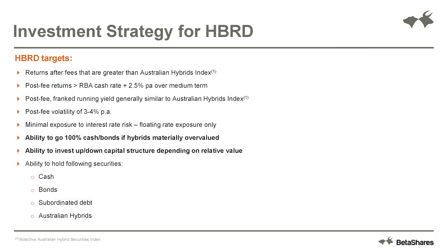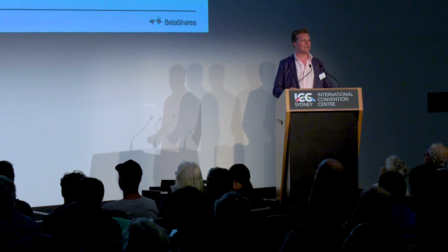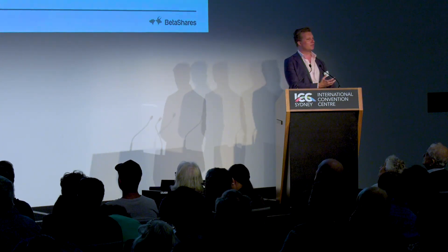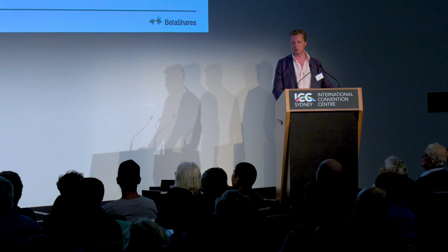Looking at the characteristics of the HBRD fund: it targets returns after fees greater than the Australian hybrids index, so it's trying to generate some outperformance for investors. It also has an objective to generate post-fee returns greater than the RBA cash rate plus 2.5%. That's important because it says this fund does not just try to outperform by falling less when hybrids are falling — rather, it has an objective to provide an absolute return, a positive return over the medium term regardless of market ups and downs. It also has an objective to provide a franked yield generally similar to the hybrid market.